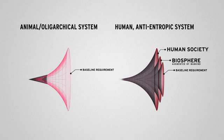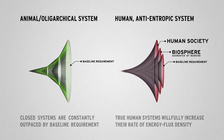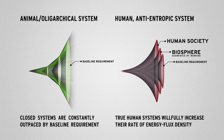Unlike animal species, which cannot willfully transform themselves to rise to what the next upshift requires of them, and oligarchical systems, which are intentionally committed to a policy of no technological development and no progress, as with the Green Movement and the British Monarchy's present drive for population reduction.